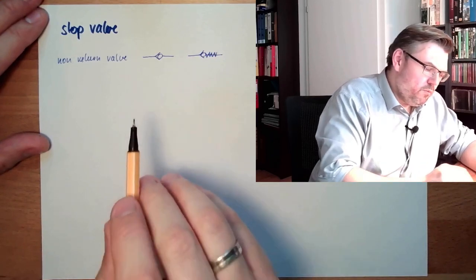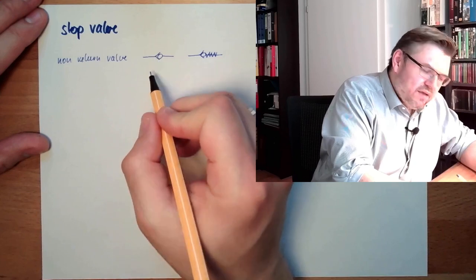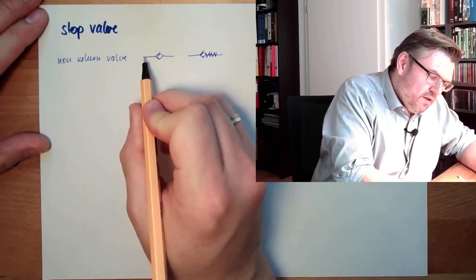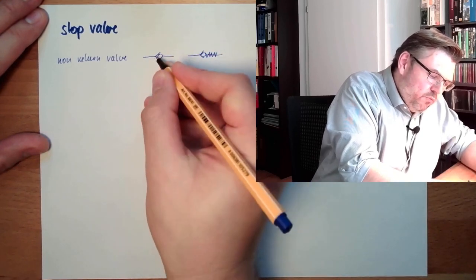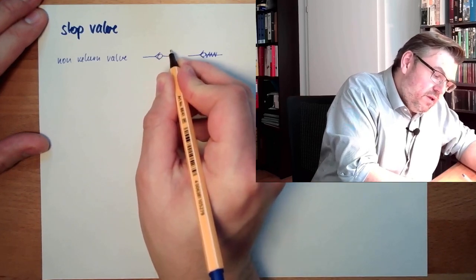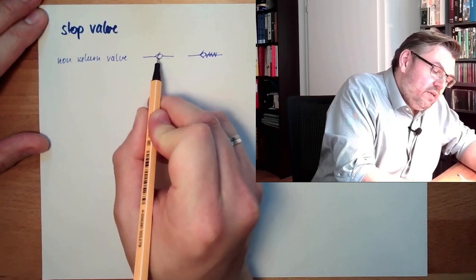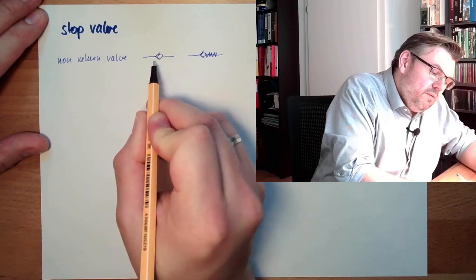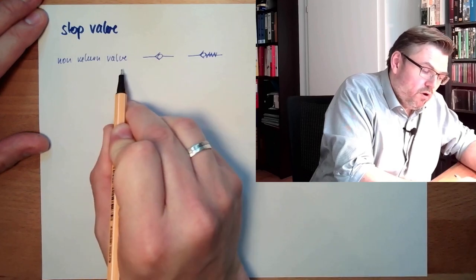You can think about this circle here as a ball and this as a seat. If pressure comes from here and here is no pressure, this ball will be pressed against the seat and will seal here, so there is no air coming through. If pressure is here higher than here, this ball will be lifted off the seat and air can stream by. So air from here to here is no problem; from here to here it's blocked. Non-return valve.